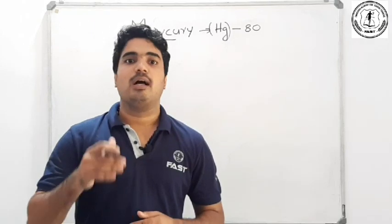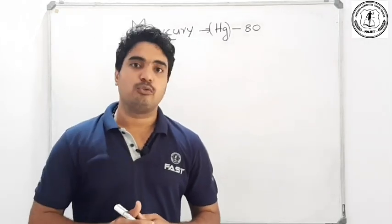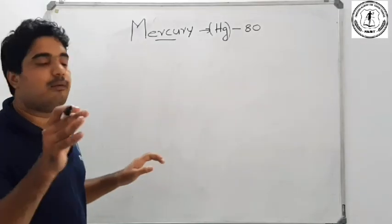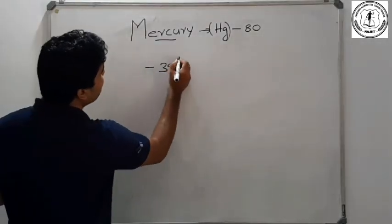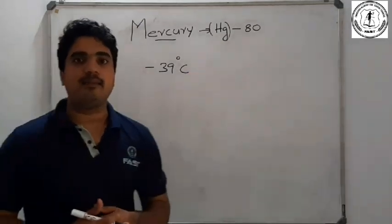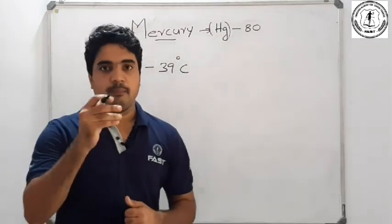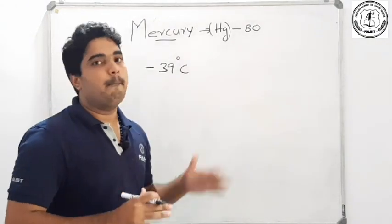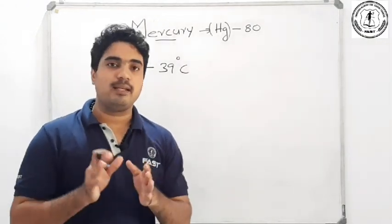Magnesium — the gold of metals. Mercury is a liquid metal with a melting point of minus 39 degrees Celsius. Mercury is negative — that is, its melting point is minus 39 degrees Celsius. The gold is a metal.